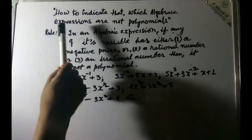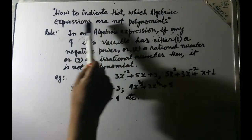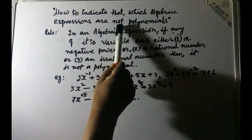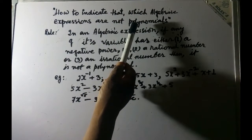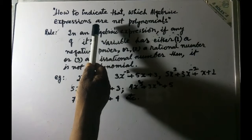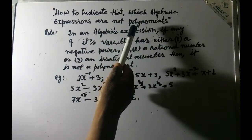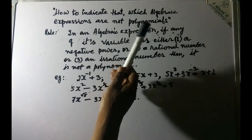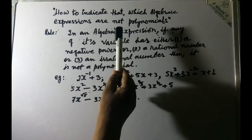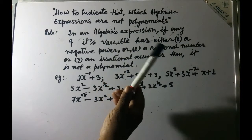So one should be able to indicate an expression and be able to tell that the expression is a polynomial or not. So how do we do? We simply apply this simple rule.